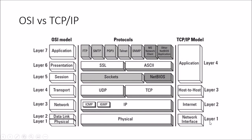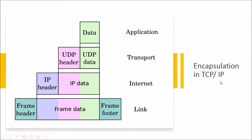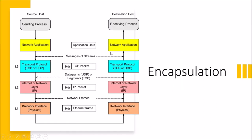There is a concept of encapsulation in the TCP/IP suite. When you are in the application layer, you have raw data to transmit to a receiver over the internet. It goes to the transport layer, which adds a UDP header. Then that packet goes to the internet layer, which adds an IP header. Then it goes to the link layer, which adds a frame header and also a frame footer.